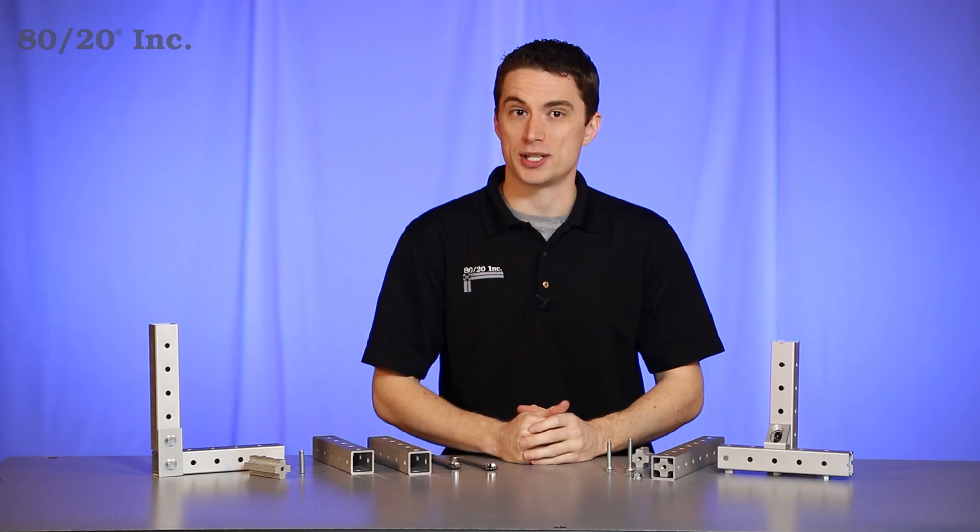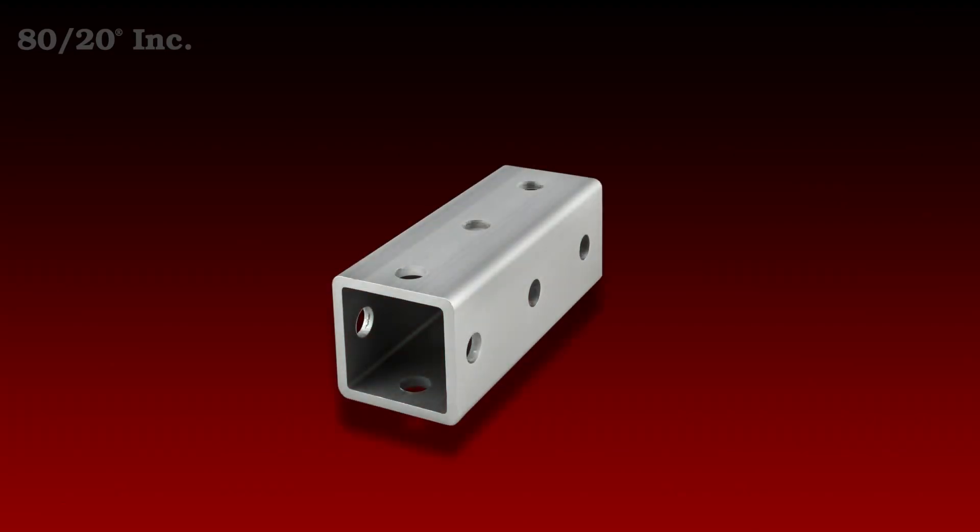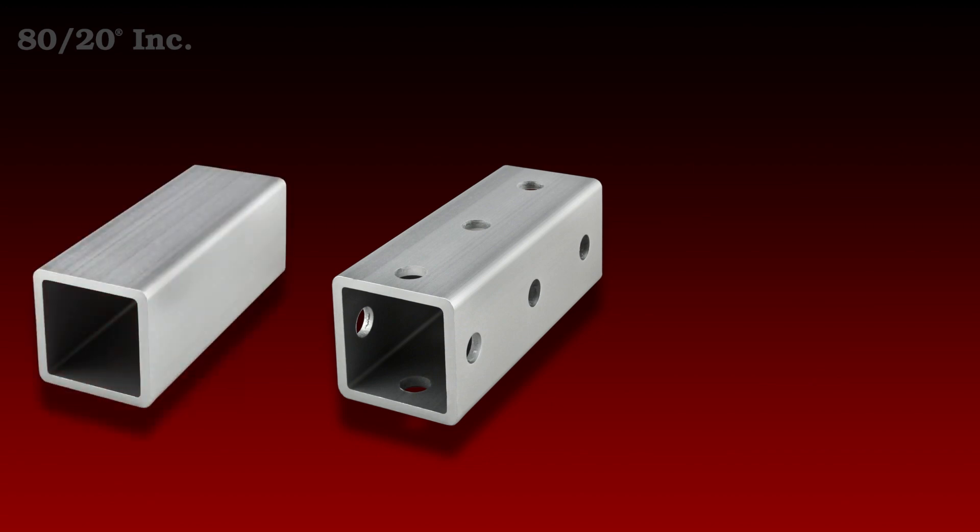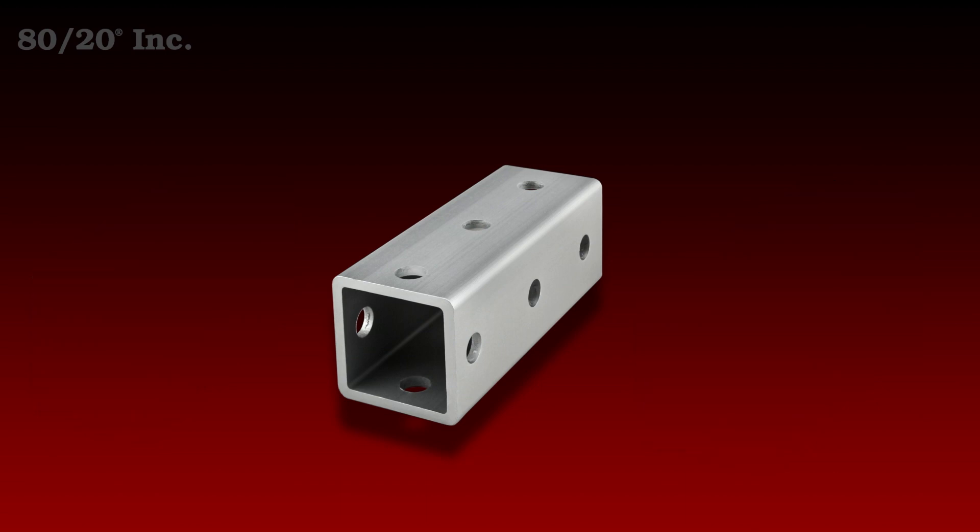Next, you'll want to decide your hole placement and what you're looking for. These bars come standard with through holes every inch and a half, but they can also come smooth or with machined holes in specific locations. Today we're going to use the pre-drilled hole placement.